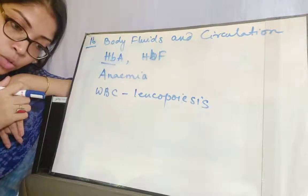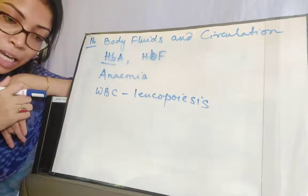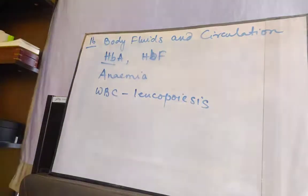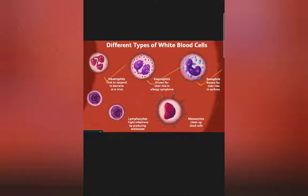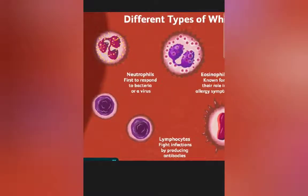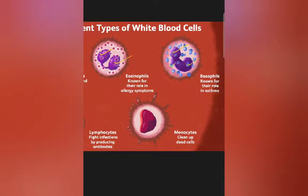WBCs are mainly categorized into two types: agranulocytes and granulocytes. Granulocytes include neutrophils, eosinophils, and basophils. Granulocytes are leukocytes that contain cytoplasmic granules and have a lobed nucleus. In neutrophils you can see three lobes; eosinophils have two lobes; basophils have about two and a half lobes. Generally in granulocytes the nucleus is divided into two, three, or more lobes.